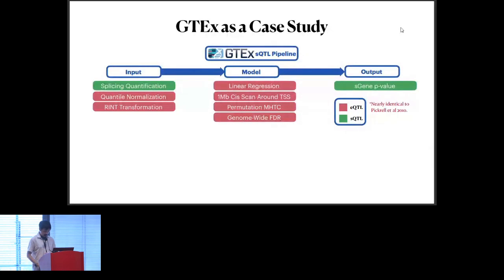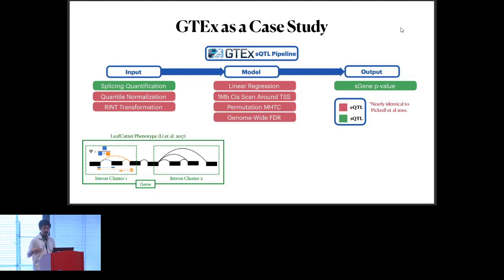Despite the importance of SQTLs, the methods to detect and analyze them have not changed in over a decade. The GTEx consortia recently published a study in 2020 where they basically tried to create an SQTL catalog. What I'm showing on the screen here is the pipeline they used in this study. What you see in red are basically all the steps in this pipeline that were adapted directly as is from EQTL pipelines without any change. The only thing they really changed here was the input representation, which was a splicing quantification created by a method called leafcutter.